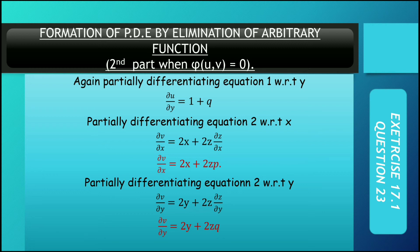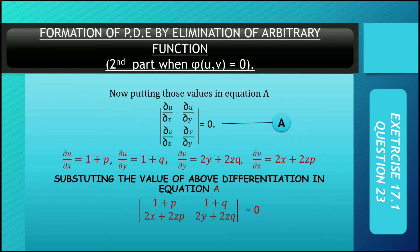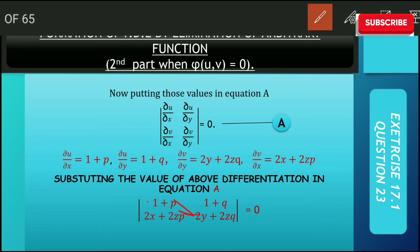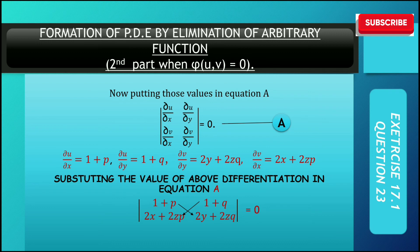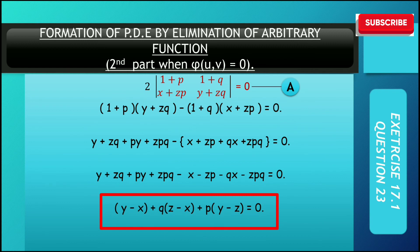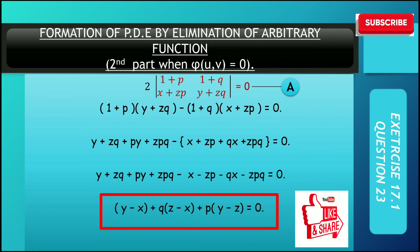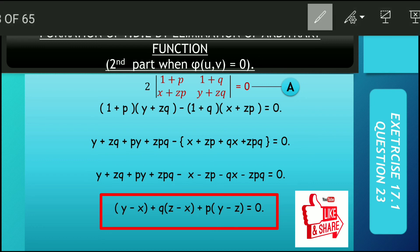If you understand lectures 1 and 4 on partial differentiation, similarly write these partial derivatives. Setting up the determinant and expanding: (1 + p)(y + zq) − (1 + q)(x − zp). Opening brackets: y + zq + py + zpq − x − zp − qx − zpq. The zpq terms cancel. Taking common factors — (y − x), p and q terms group together — and the answer comes out easily.